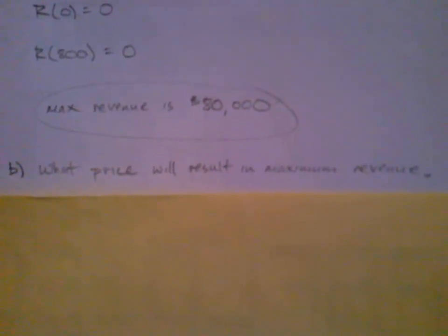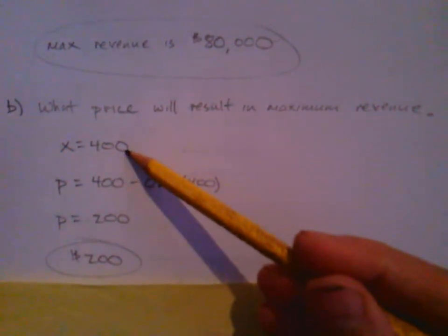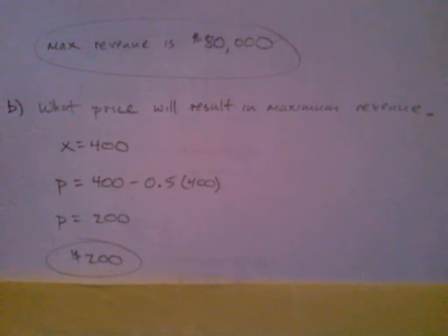What price will result in maximum revenue? So we know how many cameras we should produce. It was 400. What does that mean for the price? What are we going to set the price at? That's important. We need to know how many cameras to produce, and we need to know what to set the price at. If you remember, x equals 400. We knew that. And we know that the price is 400 minus 0.5 times x. So all we got to do is put that right on in there, and we know the price. We're going to set that price at $200 per camera. So if we sell 400 cameras at $200 a piece, we're going to be making a nice revenue of $80,000.